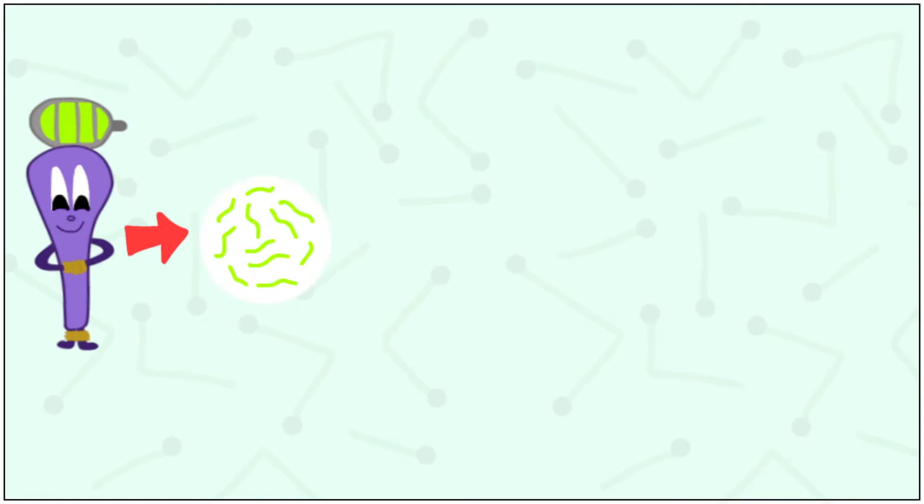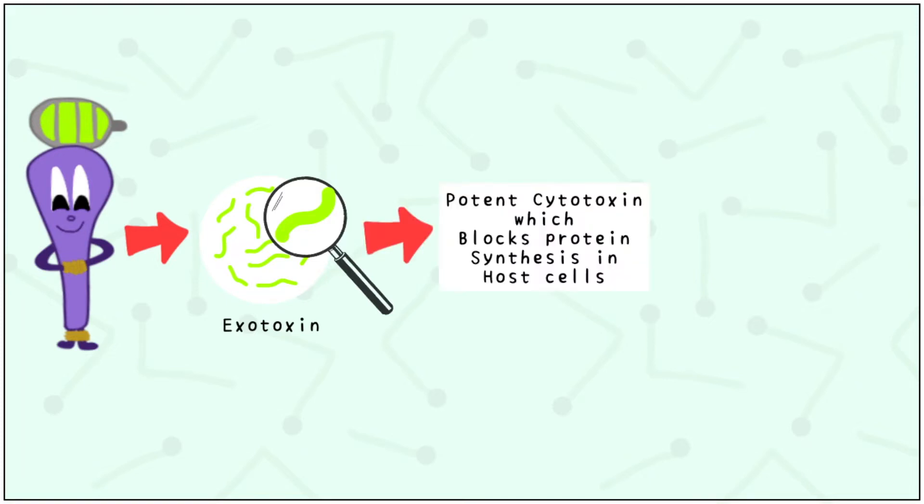Corynebacterium diphtheriae produces an exotoxin. Let us take a closer look at it. It is a potent cytotoxin which blocks protein synthesis in the host cell, leading to cell death within a matter of minutes. The toxin has a small central part and multiple larger peripheral parts.